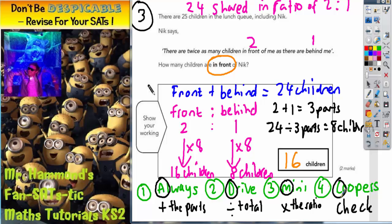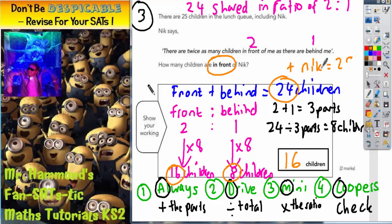Before we move on, we haven't actually talked about step number four. Step four is called Check, and that's where we check that the two answers we got — 16 children and eight children — actually add up to what we started with. We did start with 24 children. So 16 and eight makes 24 children, plus Nick, and that makes the 25 children that we started with right at the beginning of the question.